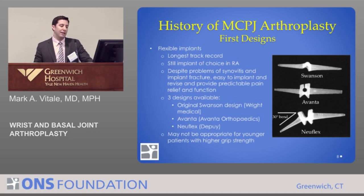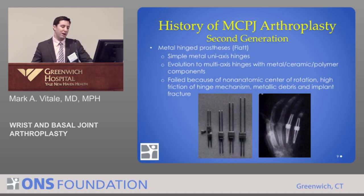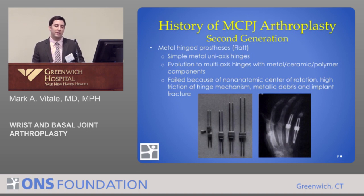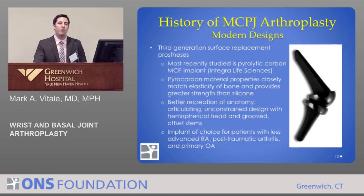The Swanson implant is not a great option in younger patients who require higher grip strength, so there are other options. There was a second generation of MCP joint replacements — metal replacements — designed by Flatt. This was a simple hinge design that did not withstand the test of time and failed because it had a non-anatomic center of rotation, the hinge had a high degree of friction, there was a lot of metallic debris which accumulated, and the implants did sometimes fracture.